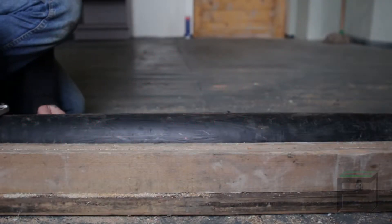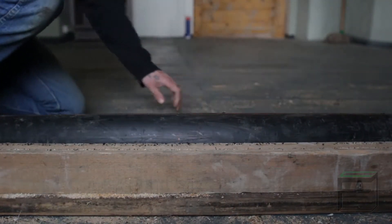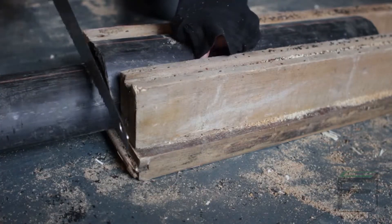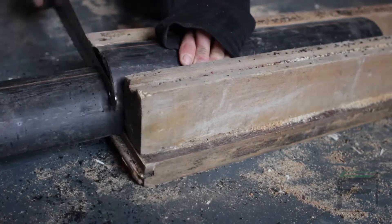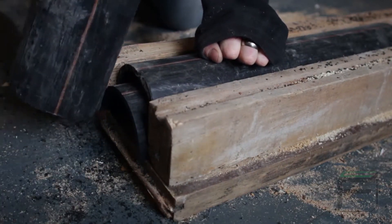To begin, use a jigsaw to cut your PVC pipes lengthwise in half. Optionally, you can build a quick wooden jig out of some scrap wood to hold them securely while you cut them. Each of these halved PVC pipes will be one of your wind turbine blades.